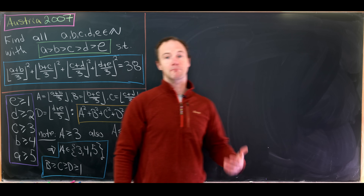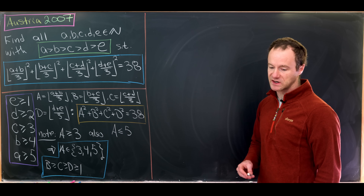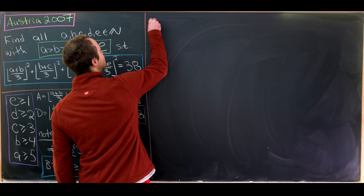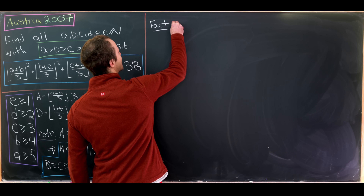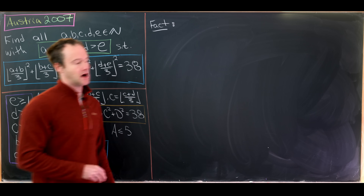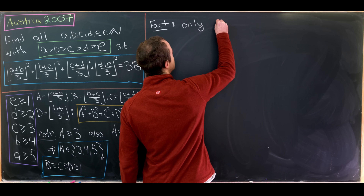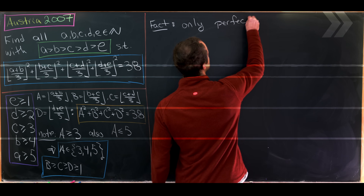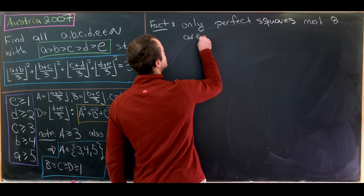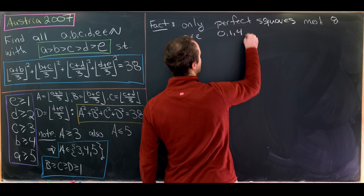Now we're going to work mod 8, because the only perfect squares mod 8 are 0, 1, and 4. You can easily check this by making a chart where you square everything mod 8. So our fact: the only perfect squares mod 8 are 0, 1, and 4.